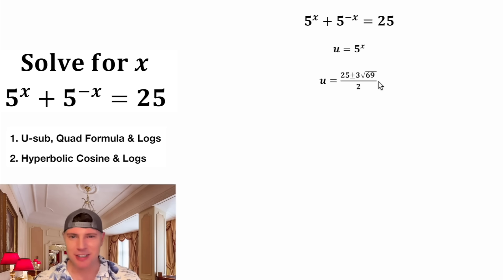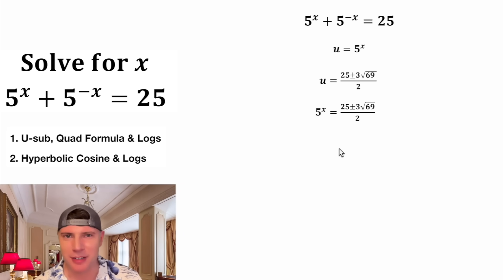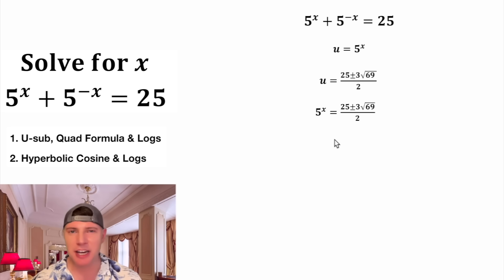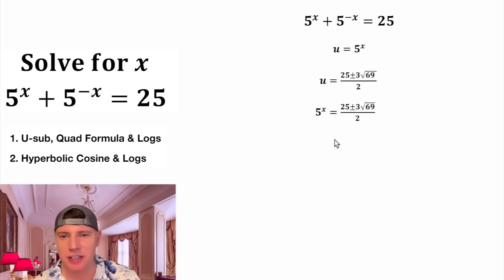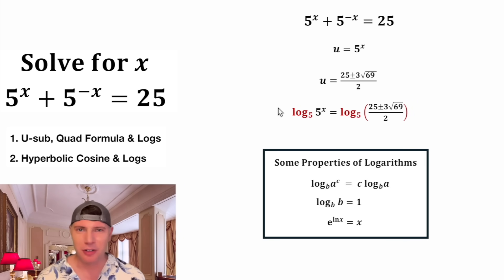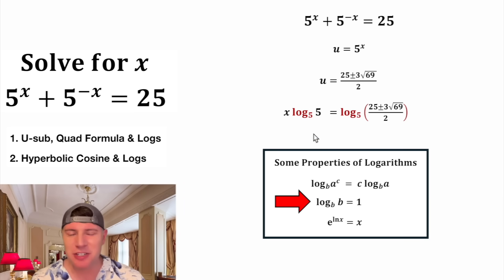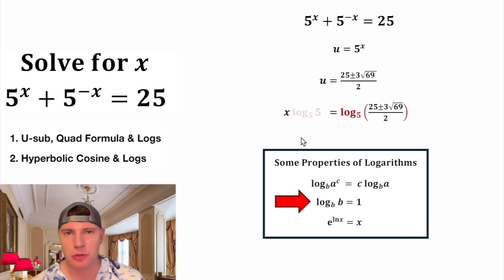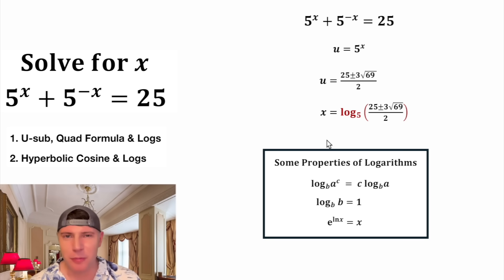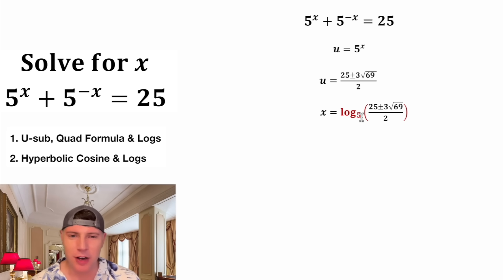We're not done because we're trying to solve for x. So in the place of u, we're going to plug in 5 to the power of x. Now we've got to solve for x. This x is in the exponent — anytime you have a variable in the exponent, that's when we use logarithms. Since the base of the x exponent is 5, we're going to do log base 5 to both sides. The first property we'll use says this exponent can be brought to the front, and anytime the base of the log equals the argument of the log, the whole thing equals 1. Using logarithms, we've got the x all by itself, equal to log base 5 of this.